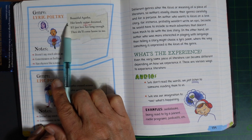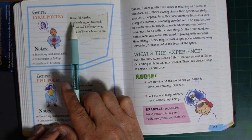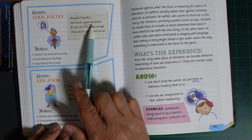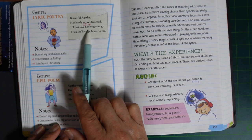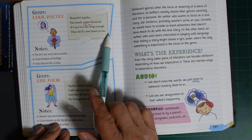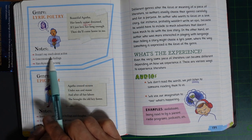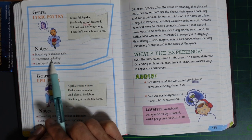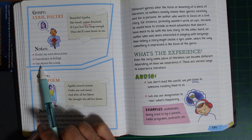Genre: Lyric Poetry. Beautiful Agasa, all love will shrink if I just love her long enough, then she'll come home to me. Notes: Doesn't say much about action. Concentrates on feeling. Has rhyme, rhythm, and color.